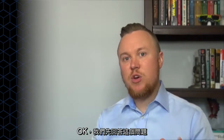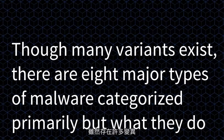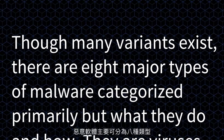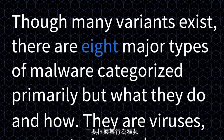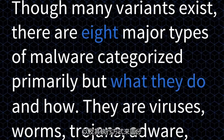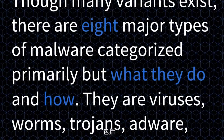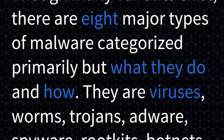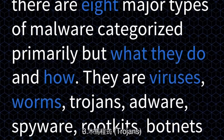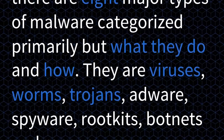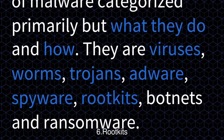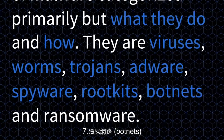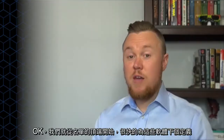Let's answer the question first and then dive into the specifics. Though many variants exist, there are eight major types of malware, categorized primarily by what they do and how. They are viruses, worms, trojans, adware, spyware, rootkits, botnets, and ransomware.